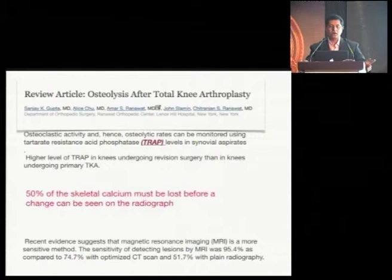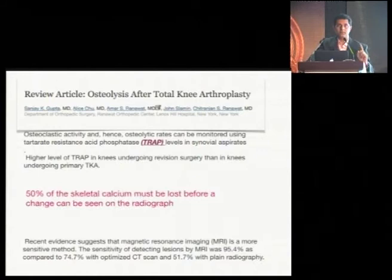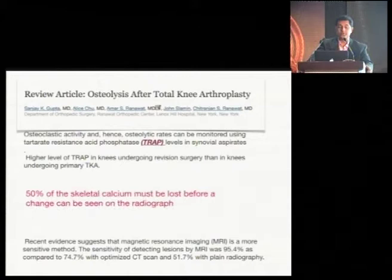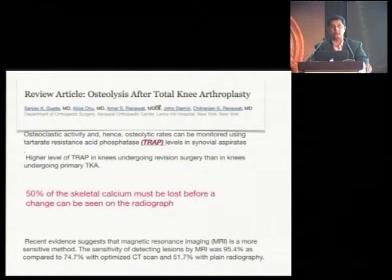A new area of research is how to determine osteoclastic activity in synovial fluid. This was addressed by Amar Anwar in a 2015 JBJS paper, who said you can measure levels of tartrate-resistant acid phosphatase to indicate whether wear-related osteolysis is ongoing. He also noted that 50% of skeletal calcium must be lost before it is evident on radiographs, and that MRI is a much more sensitive method to determine osteolysis — 95.4% specific compared to 74.7% for CT and less than 51% for plain radiograph.